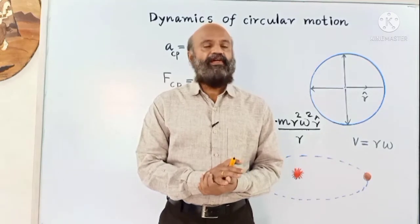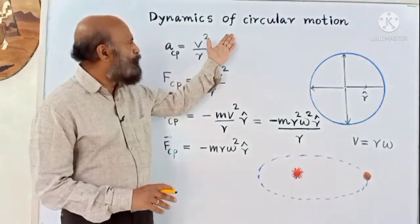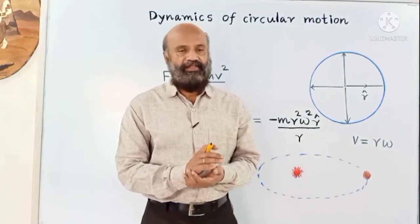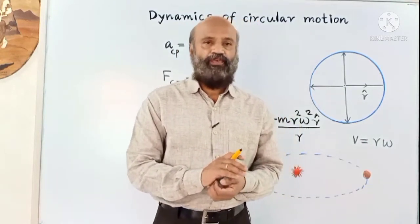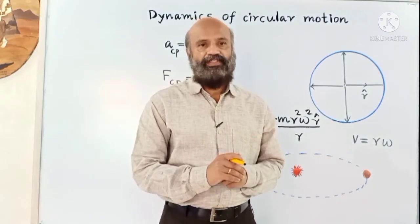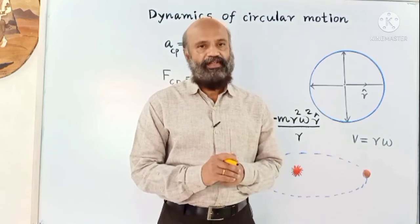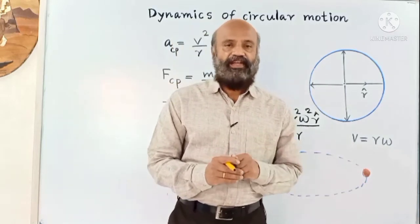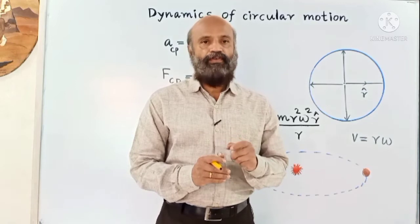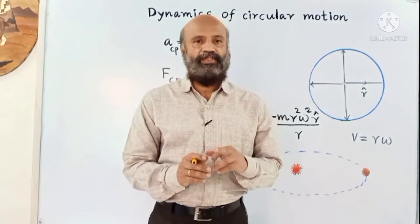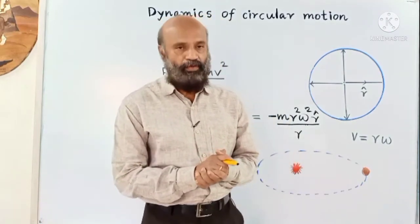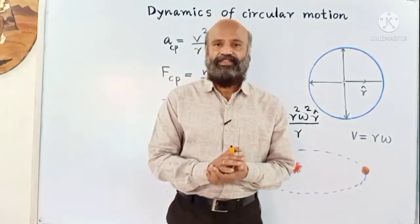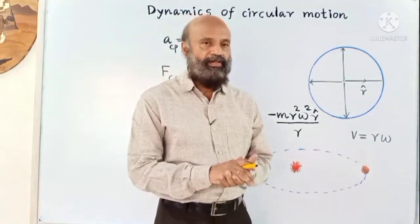In this video let us see dynamics of circular motion. Velocity is a vector quantity so it has both magnitude and direction. Velocity of a particle can be changed in three different ways. If the magnitude of the velocity is changing but direction is not changing, then the body is moving in a straight line. Second case: if the magnitude is not changing but direction is continuously changing, we call it uniform circular motion. Third type: both magnitude and direction are changing — that is non-uniform circular motion.